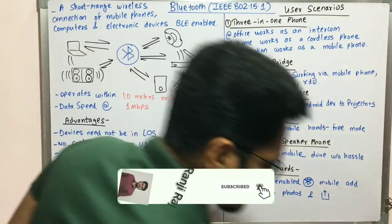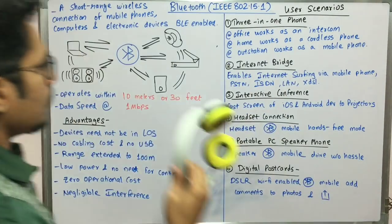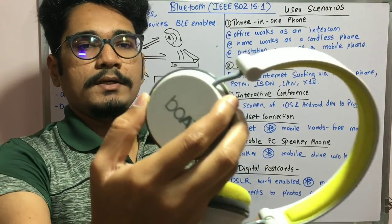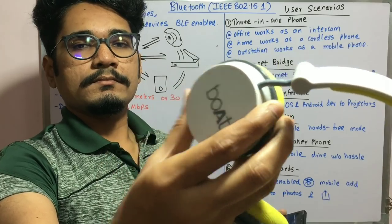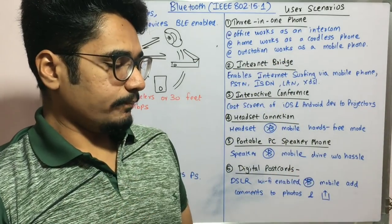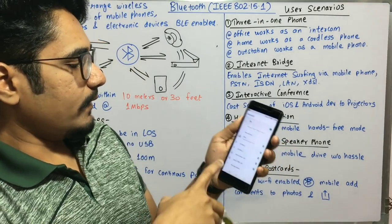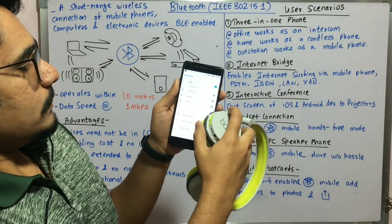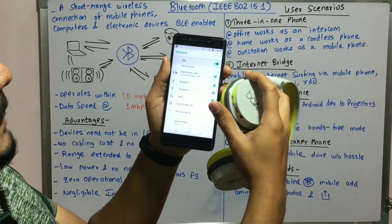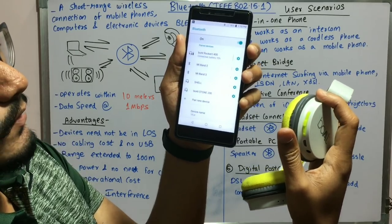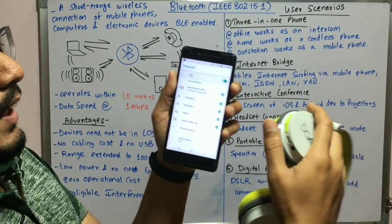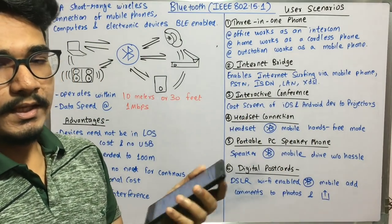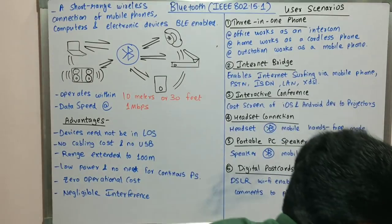Next I have my Bluetooth headphone — a Boat headset — which is also Bluetooth enabled. I'll connect this device now. You can see 'Boat Rockers 400 is ready to pair' and it connects to Boat Rockers 400. The battery percentage is also shown, and as you can see, devices can be paired even at smaller distances.